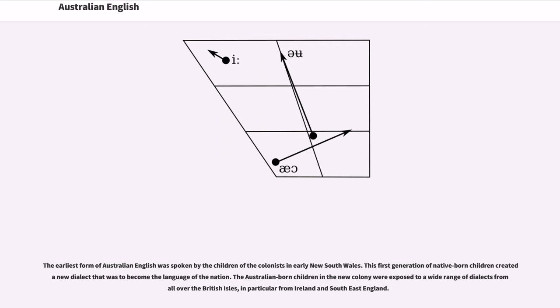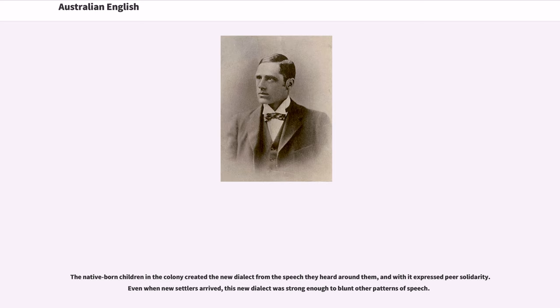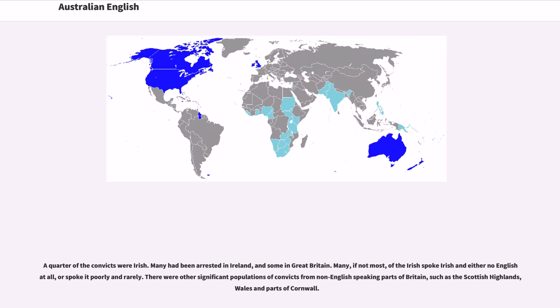The Australian-born children in the new colony were exposed to a wide range of dialects from all over the British Isles, in particular from Ireland and Southeast England. The native-born children created the new dialect from the speech they had heard around them, and with it expressed peer solidarity. Even when new settlers arrived, this new dialect was strong enough to blunt other patterns of speech.